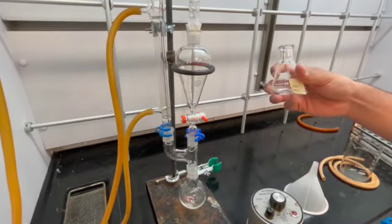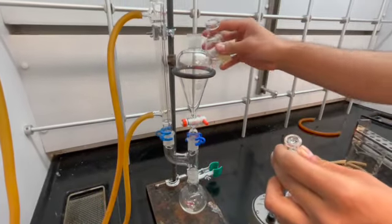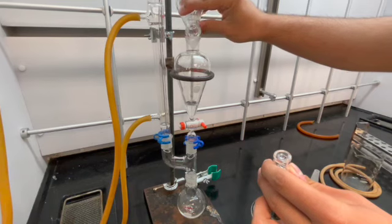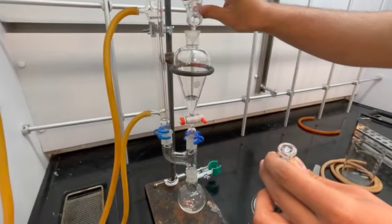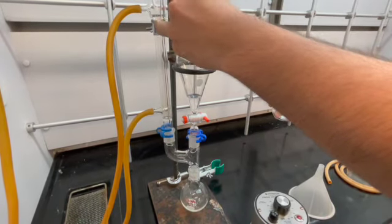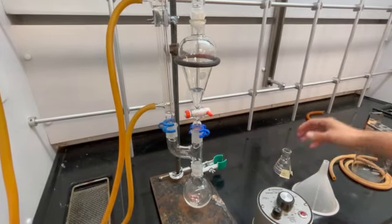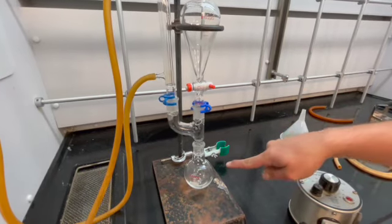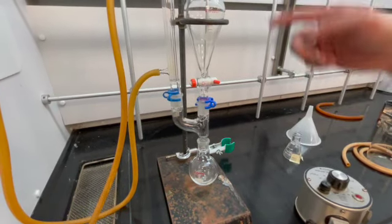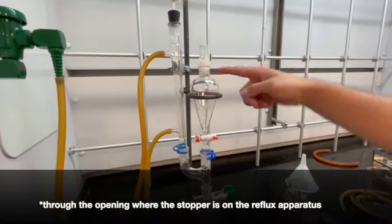We will grab five milliliters of diethyl ether and place it through the reflux. Once we do the whole process, we have to let this sit and wait till it clouds up and bubbles a little bit. Then we will add another 6.5 milliliters through the reflux and let it drip in.